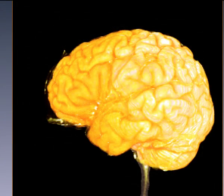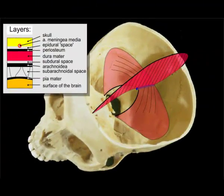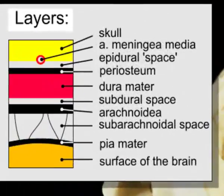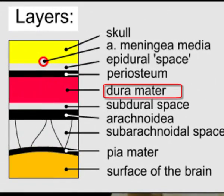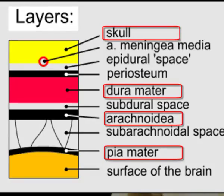The third of the meninges is the pia, which sticks to the surface of the brain. To rehearse: the first of the meninges is the dura, which is firmly attached to the inside of the skull. Then there is the subdural space, which separates the dura from the second meninges, the arachnoid. Beneath the arachnoid is the subarachnoidal space. And finally, there is the pia, which adheres to the surface of the brain.